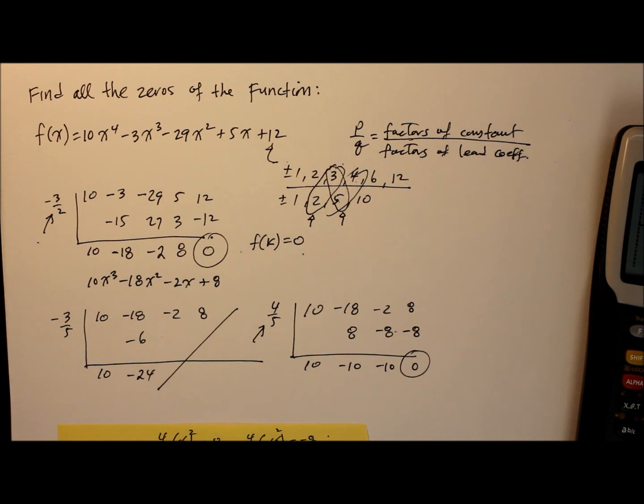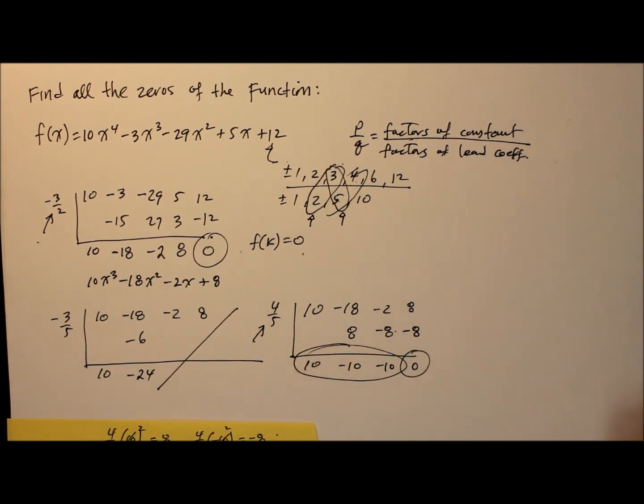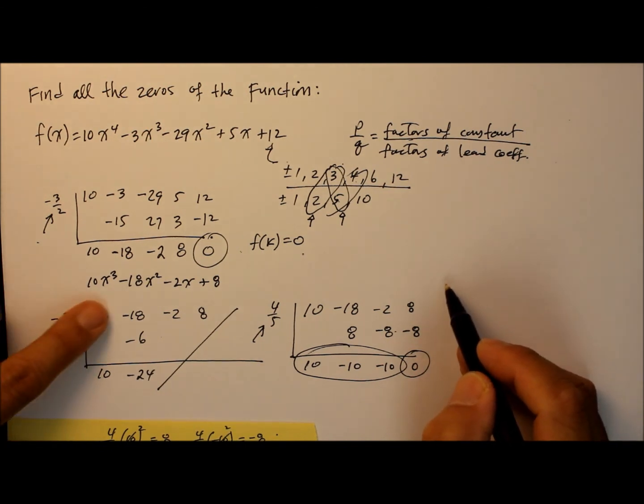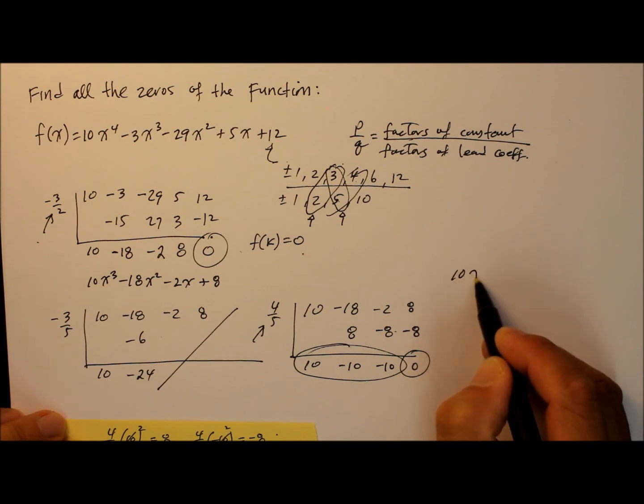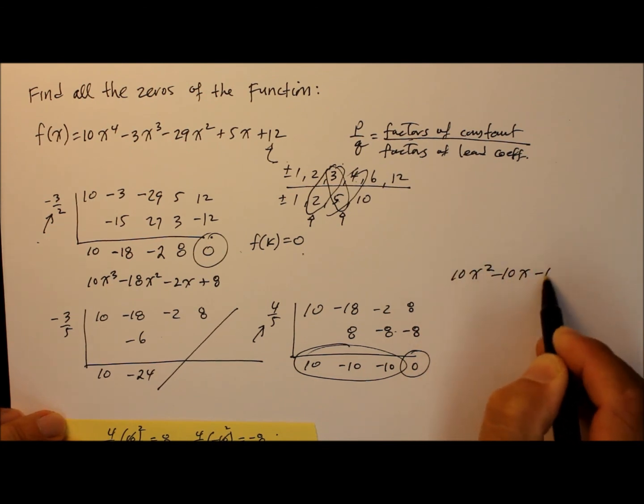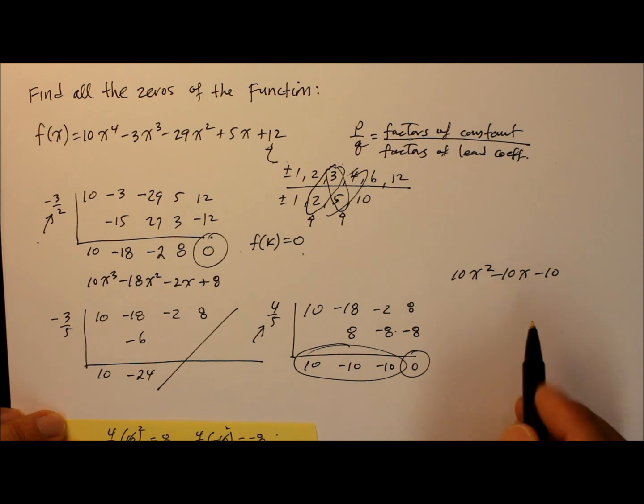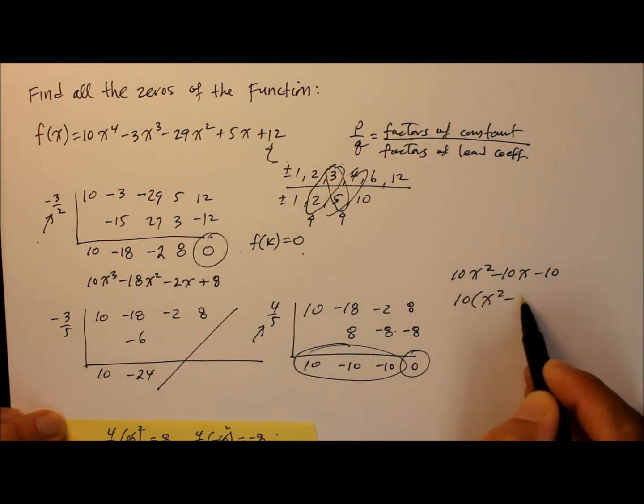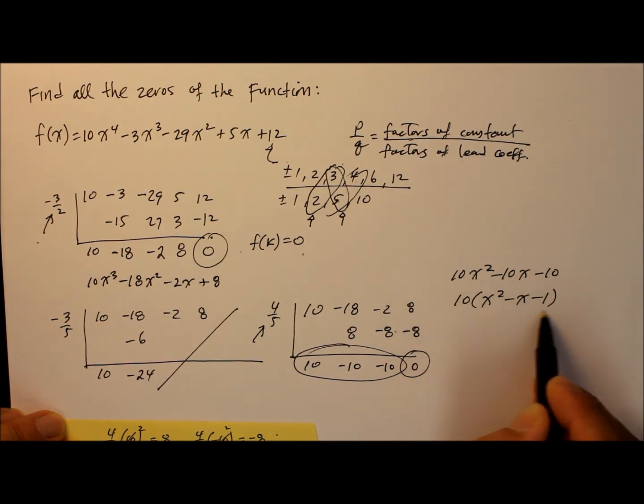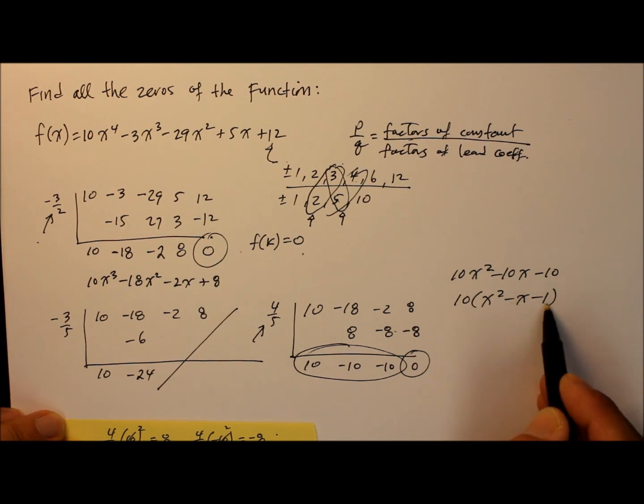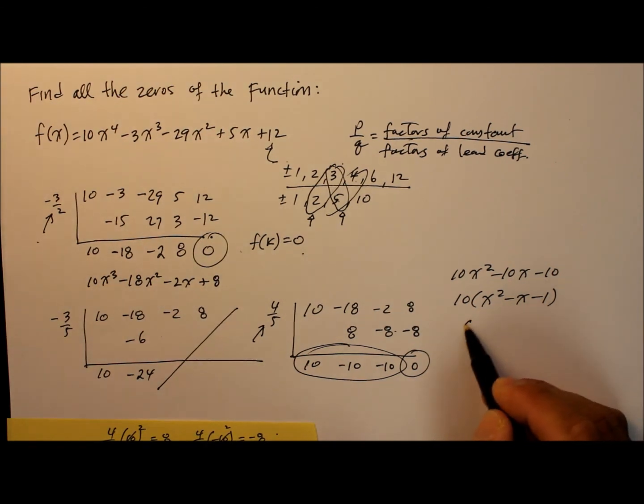So now we end up with another new polynomial with a degree less. Last time it was a cube, now it's going to be a square. So we have now 10x squared minus 10x minus 10. Wait a minute. Let's factor out the 10 and see what happens. x squared minus x minus 1. Darn. This is not factorable. Only way you're going to get the middle term is 2 and 1, but that's not a 2. So I guess we have to use quadratic formula.